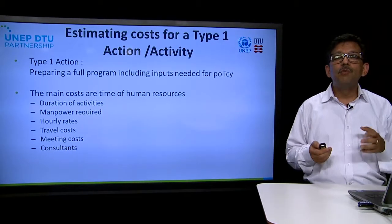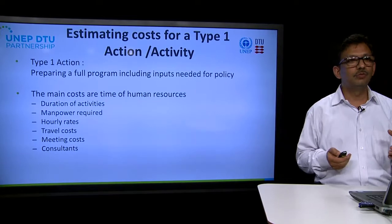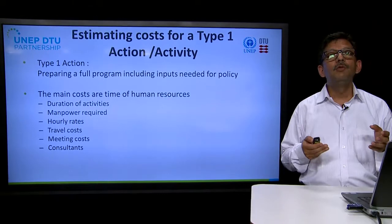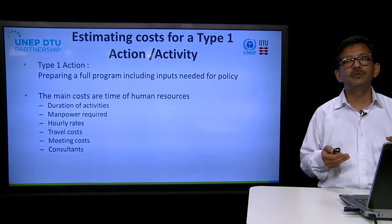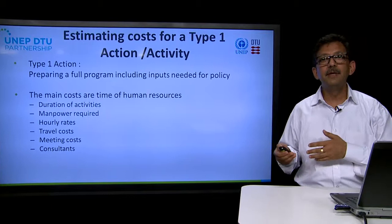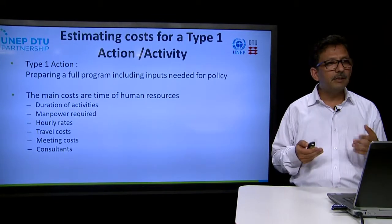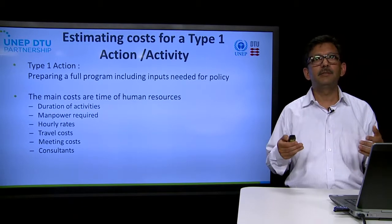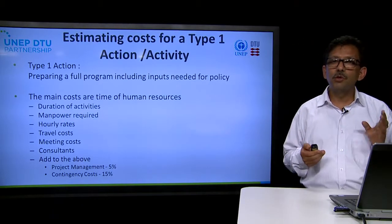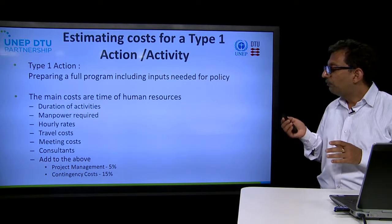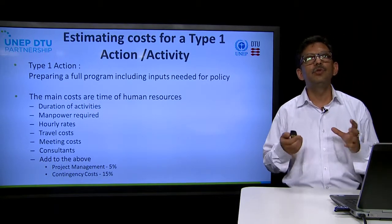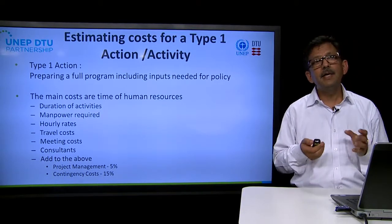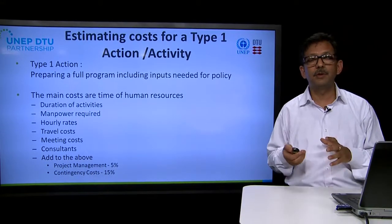In addition to human resources, we also need to keep some provision for traveling, so there should be a budget for travel. We should also keep in mind that there would be a need for stakeholder consultation, so there should be a budget for arranging meetings. There should also be a budget for engaging consultants — for example, for some analytical work. It is also good practice to plan for project management expenses, and typically around 5 percent of the budget could be allocated for project management.